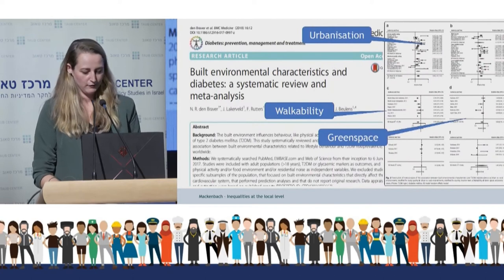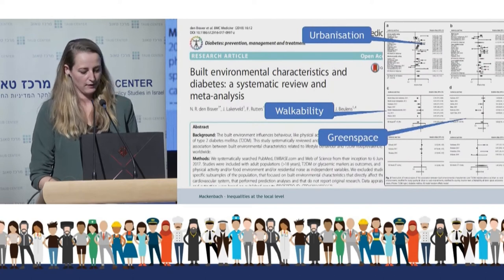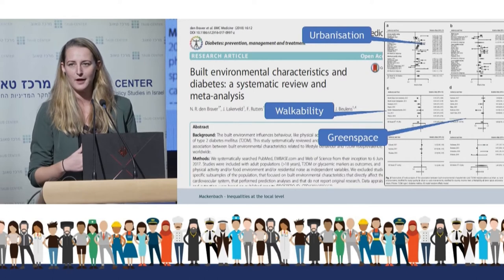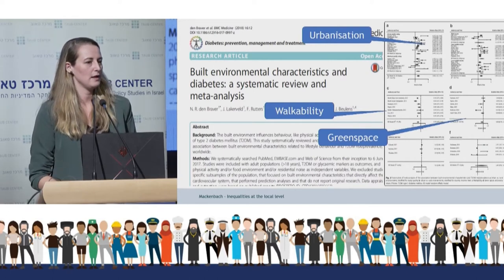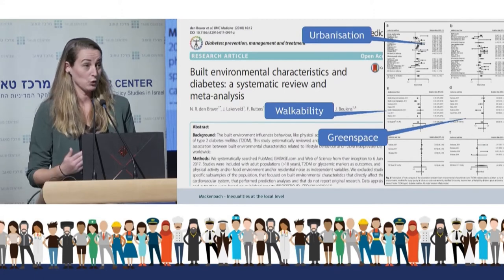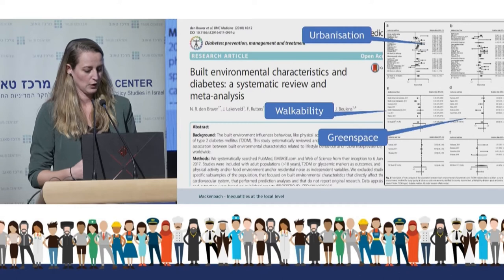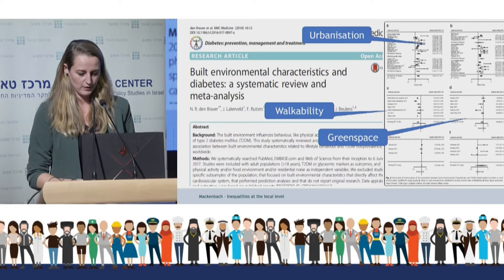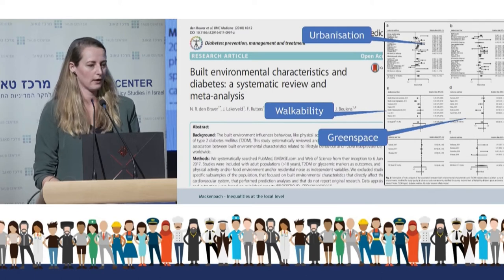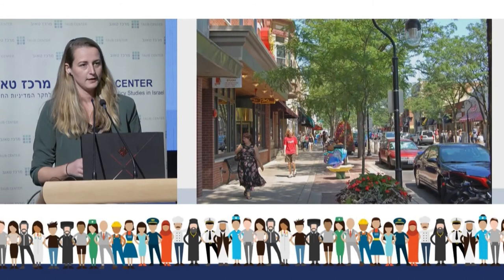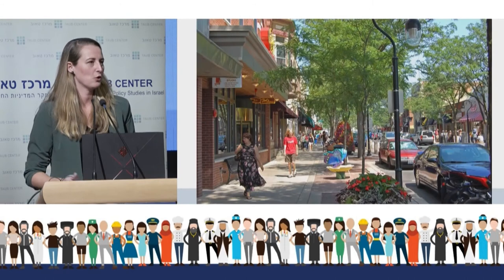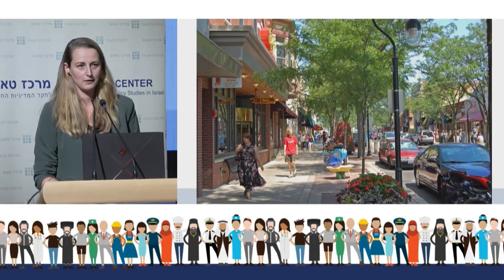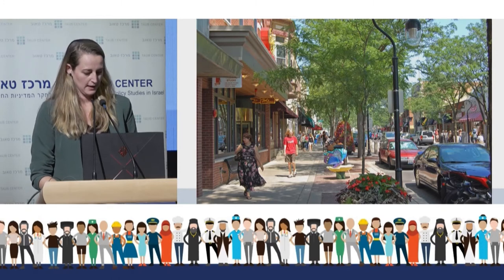My colleague systematically reviewed evidence for associations between the built environment and type 2 diabetes. She found that living in more urbanized areas was associated with higher diabetes risk — mostly in low- and middle-income countries — while living in more walkable and greener areas was associated with a lower diabetes risk. It makes sense that good local infrastructure, including good access to healthcare, healthy food, and walkability, contributes to better health.